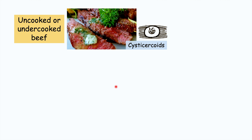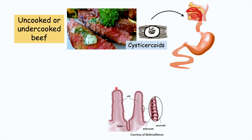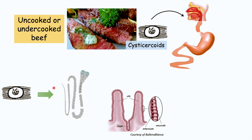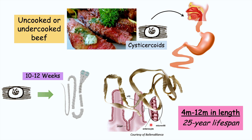The infection comes from uncooked or undercooked beef containing cysticercae, the infective stage of this tapeworm. A human eats that beef, and the cysticercae develop into an adult tapeworm in roughly 10 to 12 weeks. That adult tapeworm attaches via its scolex onto the gastrointestinal mucosa and can grow from 4 meters up to 12 meters in length. It has a very long lifespan of 25 years, so a patient can harbor this tapeworm for a long time.